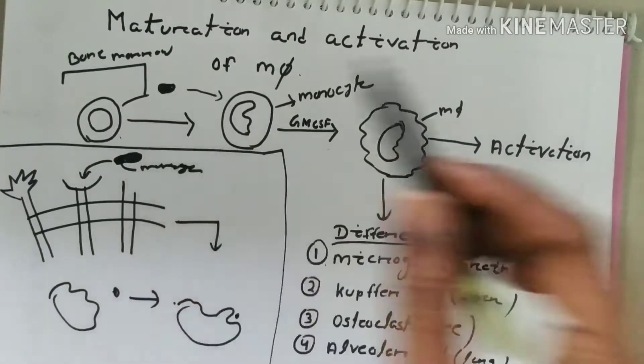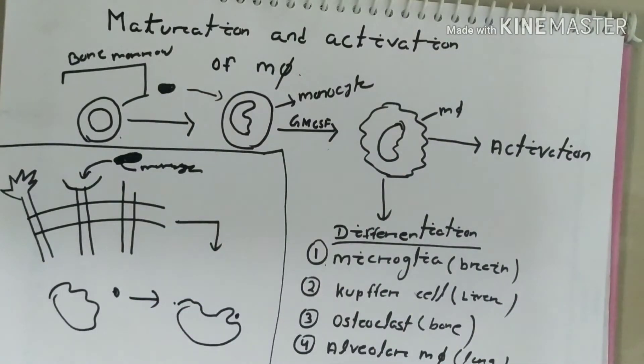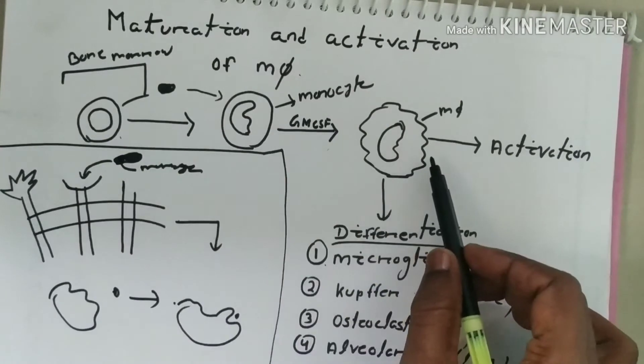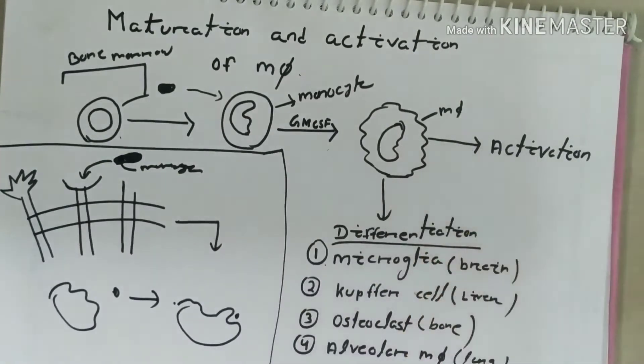From the myeloid progenitor cell, the granulocyte monocyte progenitor cell is formed, which gives rise to monocyte. From the monocyte, the macrophages form. A cytokine plays a vital role to convert monocyte to macrophage, namely GM-CSF, granulocyte macrophage colony stimulating factor.